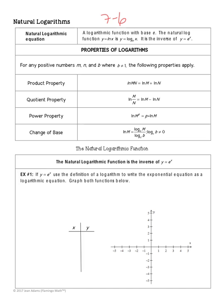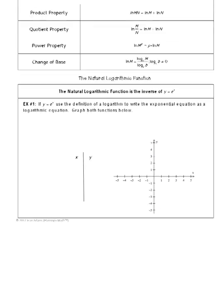The properties of natural logs are the same as the properties for regular logs. For the product property, if you multiply two things in the argument of the natural log, you're going to add them. If you divide them, you're going to subtract them. If you have the argument raised to a power, that power gets moved in front. The change of base is also the same — you take the natural log divided by the regular log. The base of that natural log would be e, but you should be able to put this in your calculator, so you should not need to use a change of base anyway.